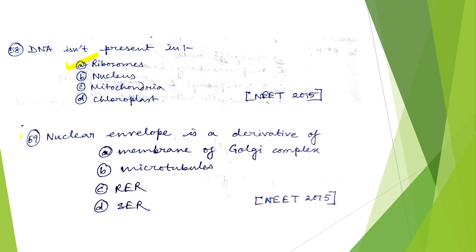Coming to question 59: the nuclear envelope is a derivative of rough endoplasmic reticulum. If you visualize the structure of a cell, the nuclear membrane is continuous with the RER membrane, which gives you the answer. The nuclear envelope is a derivative of the rough endoplasmic reticulum.